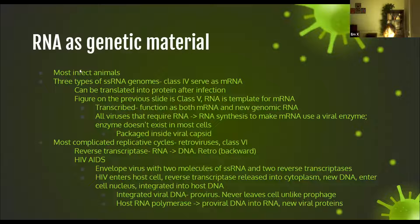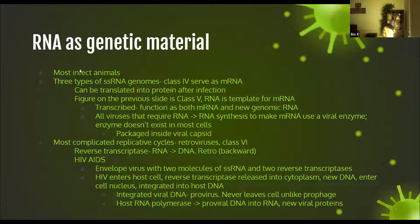How a retrovirus infects a host cell: HIV first enters the host cell and reverse transcriptase is released into the cytoplasm. The RNA turns into DNA, and this DNA is combined with the host DNA and reproduced again and again. This integrated viral DNA is called the provirus, and unlike the prophage, the provirus never leaves the cell — it just keeps replicating. The host's RNA polymerase then turns the DNA into RNA and the RNA into proteins, so we get new viral proteins.